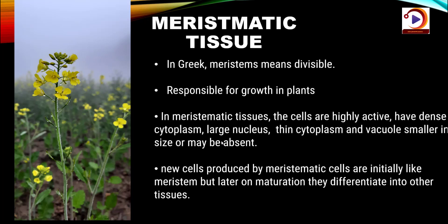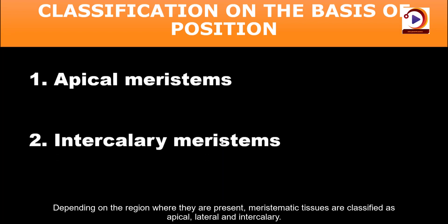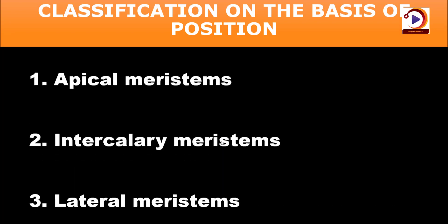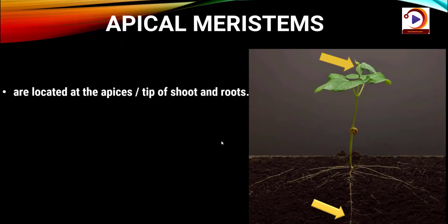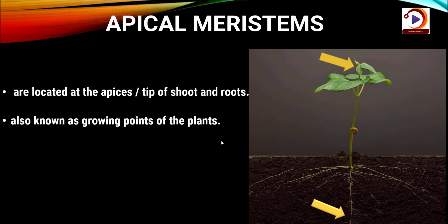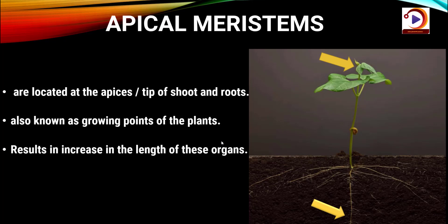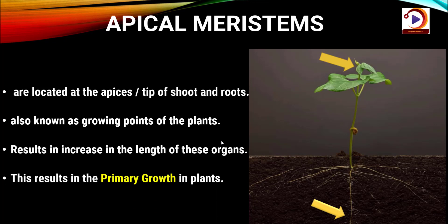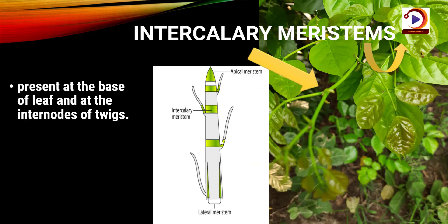Depending on the region where they are present, meristematic tissues are classified as apical, lateral and intercalary. Apical meristems are located at the apices of shoot, root and organs, and are also known as the growing points of the plant. The activity of the apical meristem brings about an increase in the length of organs, resulting in primary growth. Intercalary meristems are present at the base of the leaf and at the internodes of twigs, and they also contribute to primary growth.